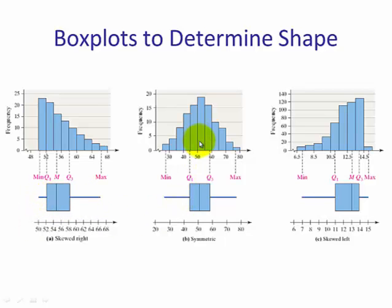If it is bell shape, then the left tail is approximately equal to the right tail, and the median is approximately in the middle of the rectangle, the box.